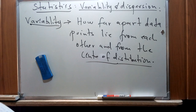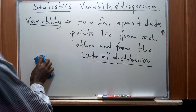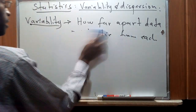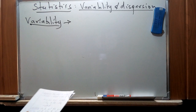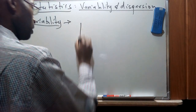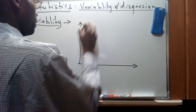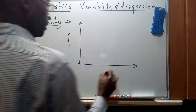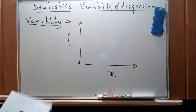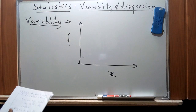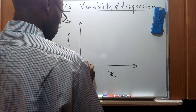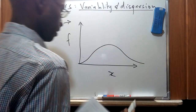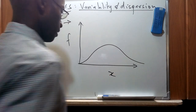Suppose we have a graph of frequency using the set of data we had listed; we can show this concept of variability. I will do away with the definition and give a graphical representation of this concept. Suppose we have a set of data on a frequency graph — this again is the set of data.